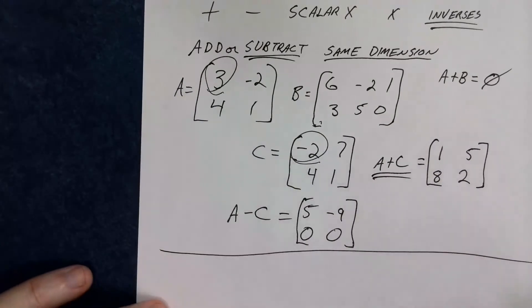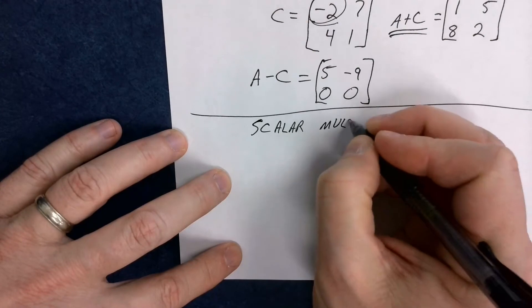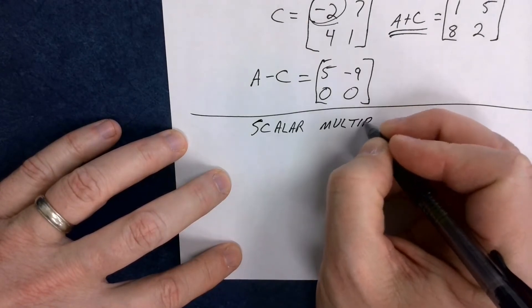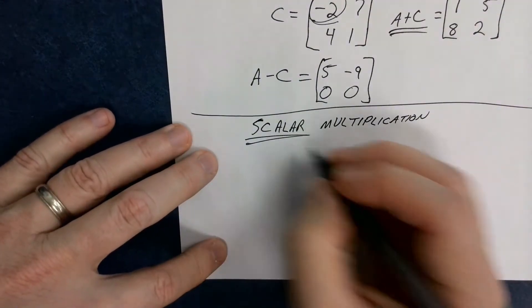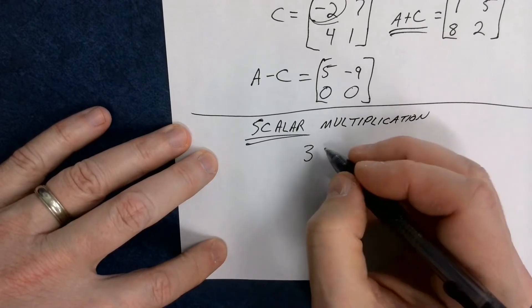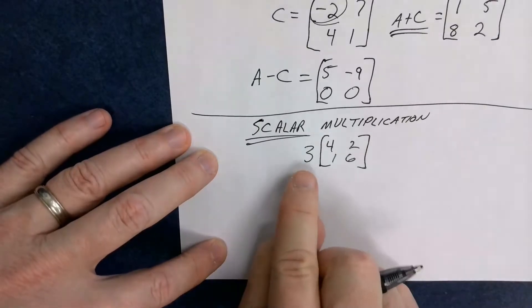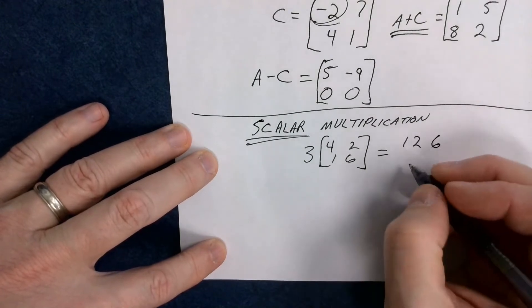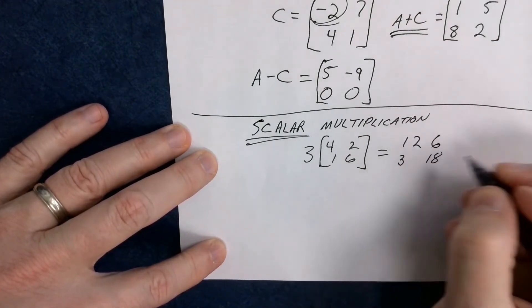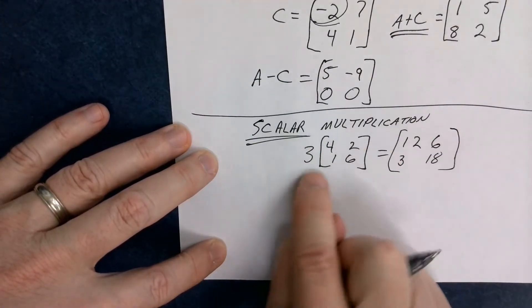We can also do something called scalar multiplication. And that's a pretty basic thing, because it scales the entire matrix. And scalar multiplication doesn't require anything. If I put a 3 outside of a 4, 2, 1, 6, and I multiply these two things together, that would equal a 12, 6, 3, 18. 3 times 4, 12. 3 times 2, 6. 3 times 1, 3. 3 times 6, 18.